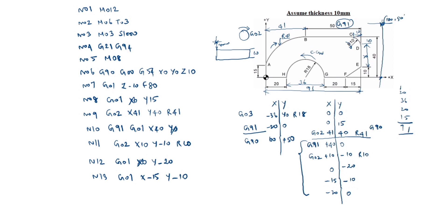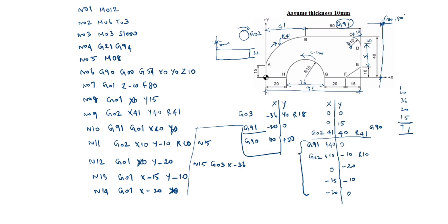N14: G01, X minus 20, Y0. N15: G03, X minus 36, Y0 or 18. N16: G01, X minus 20, Y0. N17: up to here is G91 code.